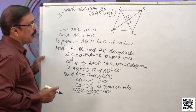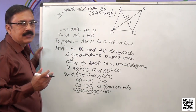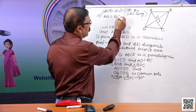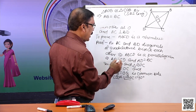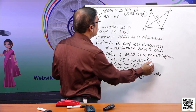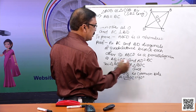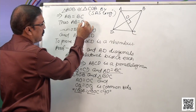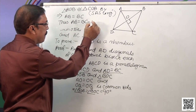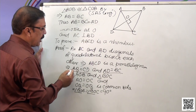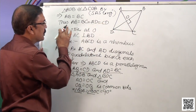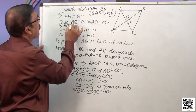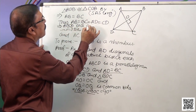By corresponding parts of congruent triangles, AB is equal to BC. Now we had AB equal to CD, AD equal to BC, and now AB equal to BC. From these three, we conclude that AB equals BC equals CD equals AD. So as all four sides of the quadrilateral are equal, ABCD is a rhombus.